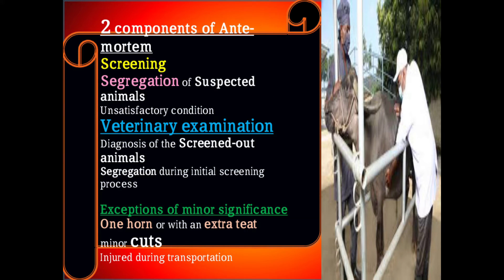There are two components of ante-mortem examination. Number one is screening of the animal, followed by segregation of suspected animals in unsatisfactory condition. Number two is veterinary examination — diagnosis of the screened-out animals segregated during the initial screening process. Exceptions of minor significance, such as one horn, an extra teat, or minor cuts during transportation, can be acceptable for further processing in the slaughterhouse after a limited time period.